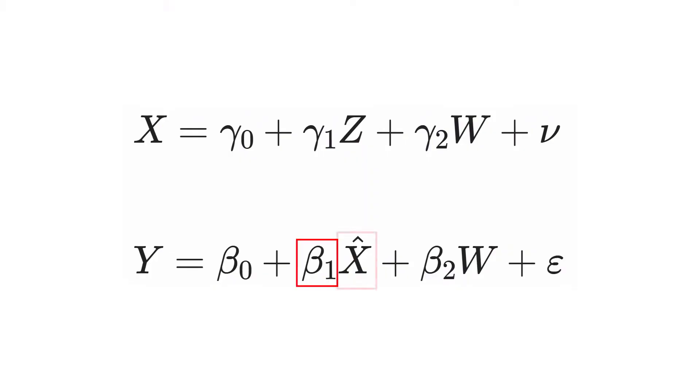By using only the part of x predicted by exogenous variation — the randomized part — when we estimate this model there is no more omitted variable bias, because the random variation in x cannot be related to the error term. The coefficient β₁ on x-hat gives us the two-stage least squares estimate of the effect of x on y. We do need to adjust standard errors to account for the fact that x-hat was estimated, not observed directly.